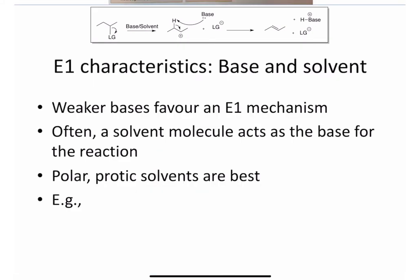You will notice that the base and the solvent are not found in the rate equation, but they are nevertheless important to consider. Weak bases favour the E1 mechanism, and what we are going to see later is that if we have a strong base, the reaction will go by a different mechanism. To have an E1 type reaction, we are looking for a weak base, and often it is the solvent that will act as the base for the reaction.